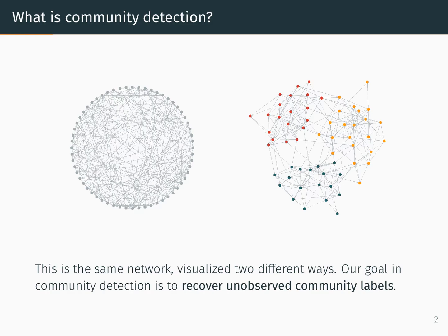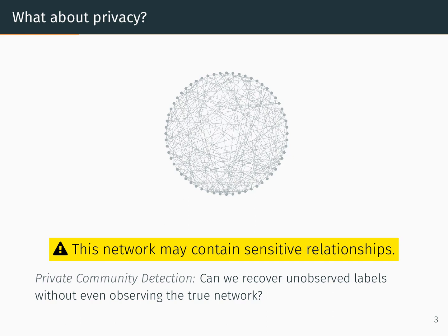So let's start by defining community detection. Here we see the same exact network visualized two different ways. In the image on the right it's clear that we have three communities in this network. On the left however we don't observe the community labels and the community structure is less clear. Our goal in community detection is to recover these unobserved community labels based on the observed relationships in the network. The issue here is that the network might contain sensitive relationships, for example edges representing intimate relationships between people or communications over a private medium. So to perform private community detection, what we really want to do is recover unobserved labels without having to even observe the true network.